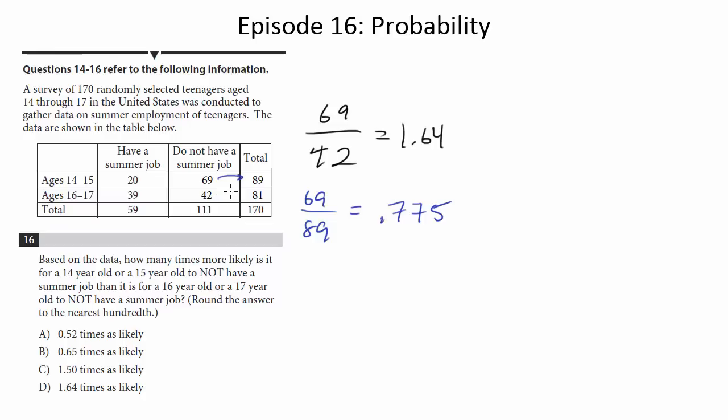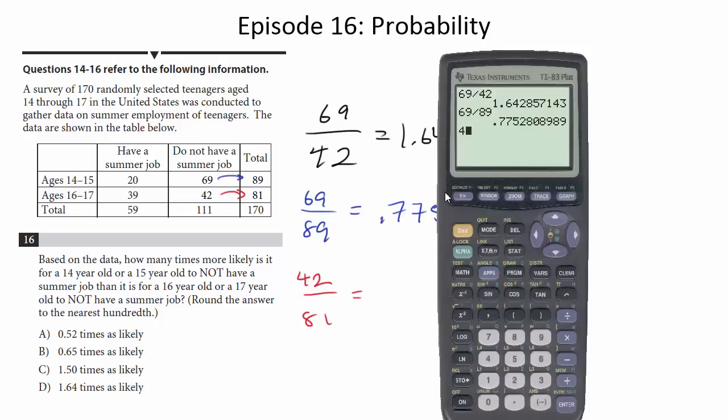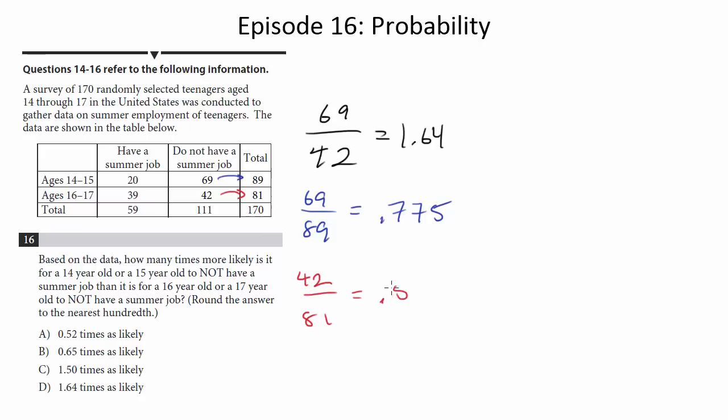The fraction of the 16- and 17-year-olds that don't have a summer job is 42 out of 81. 0.5185. So we'll say 0.519.